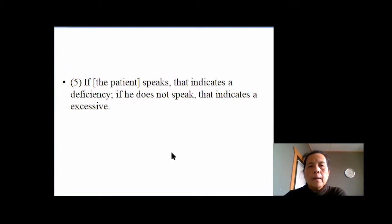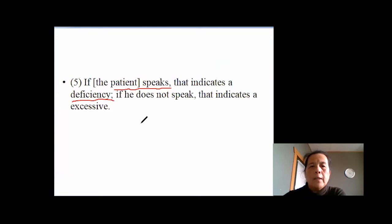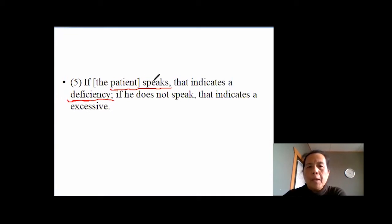Also, looking at the patient's speech: if the patient speaks — they don't want to speak, but they still can speak — that's generally an eonies-type problem. They develop gradually and it doesn't affect the speaking function. They can still speak. That kind of condition is deficiency.